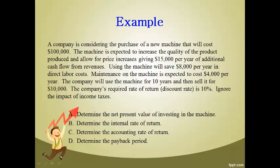We will analyze this investment from four different perspectives. Net present value will consider all cash flows in today's dollars. The internal rate of return computes the annual return on cash flows only, and the accounting rate of return is an income statement approach that also considers depreciation expense. We will determine how many years it will take the company to get the initial investment of $100,000 back. The company would like to earn 10% on the investment.